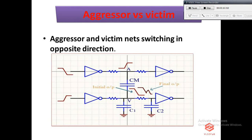In this case, we can see a bump at the victim net, and that bump depends on the coupling capacitance. Larger the value of the coupling capacitor, larger will be the bump. This bump also affects static timing analysis of the circuit.